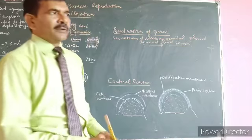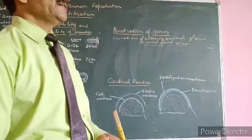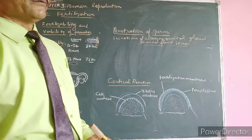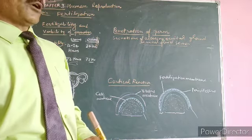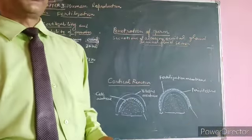These are one pair of seminal vesicles, prostate gland, and one pair of Cowper's glands. Cowper's gland also called bulbourethral gland.